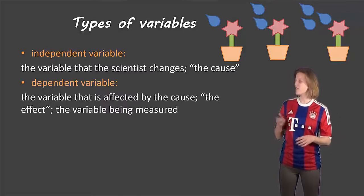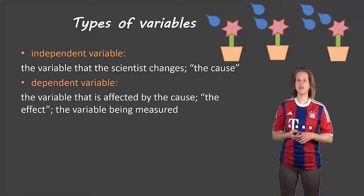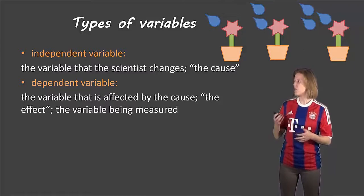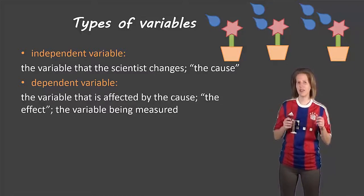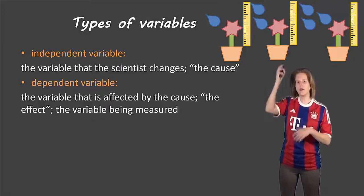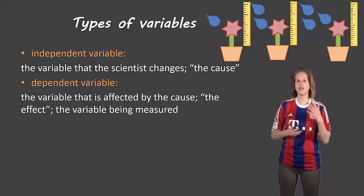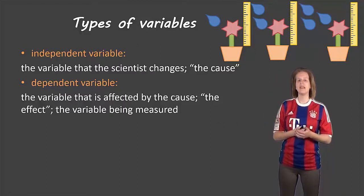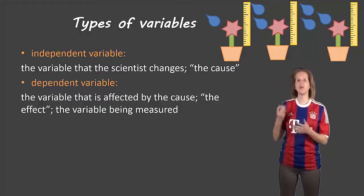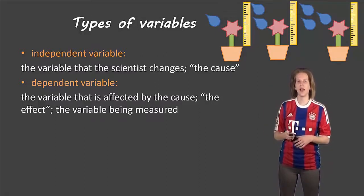The next type of variable is called the dependent variable and this is the thing that the scientist is measuring or sometimes it's called the effect. So in this case let's say we were measuring how tall those flowers grew depending on how much water we gave them, then the dependent variable would be the height of growth of that flower.